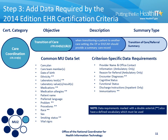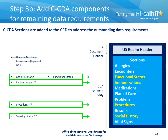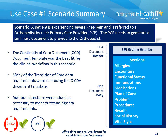The last step is to review the data required by this particular certification criterion. In reviewing the data requirements, we note that many have already been met through the use of Consolidated CDA Document Templates, and some don't apply because this is an ambulatory care setting. For those few remaining data requirements that have not yet been met, the corresponding appropriate sections from the Consolidated CDA Implementation Guide are added to the CCD to address the outstanding data requirements.